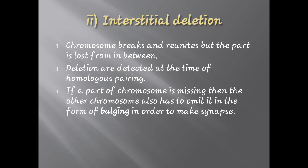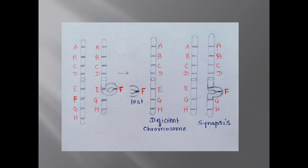Such deletions are detected at the time of synapses, that means pairing of homologous chromosomes. Here the normal homologous chromosome pairs with the deficient chromosome. The part where the segment is lost causes the corresponding part of the normal chromosome to bulge out in order to make perfect pairing.